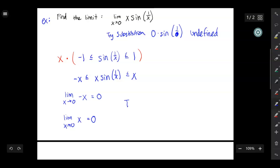So because those two outside functions give you the same limit at x equals 0, you can say then, and if you use three dots like this, that means therefore the limit as x approaches 0 of x sine of 1 over x is equal to 0. Then that would be my answer.